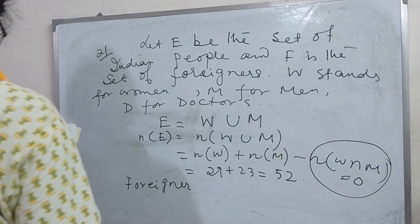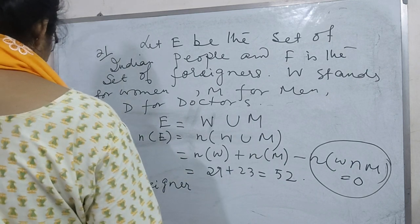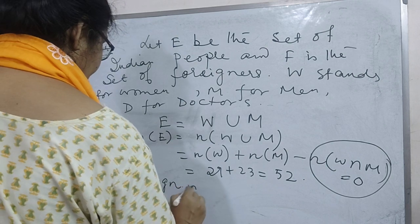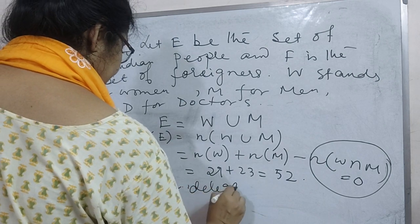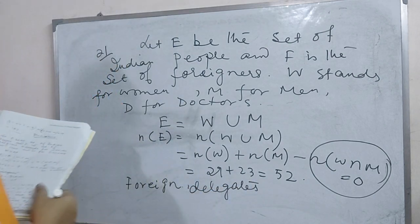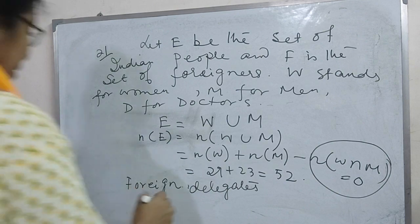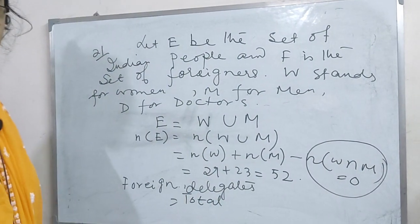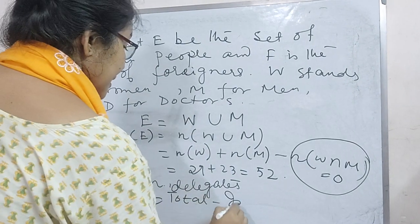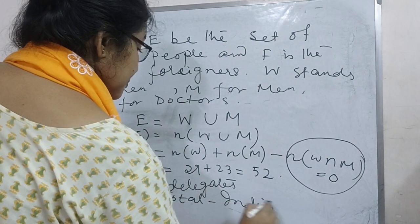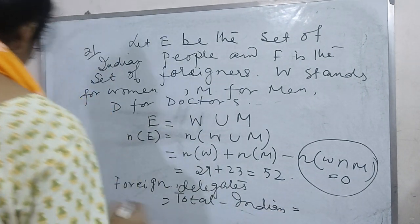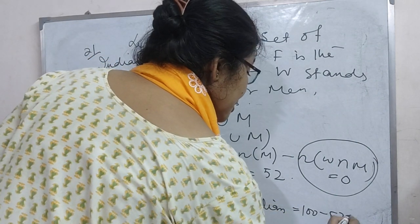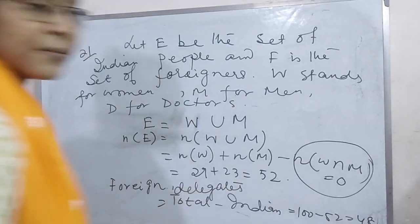Foreign delegates equals total minus Indian. Total equals 100 minus 52, that is equal to 48.